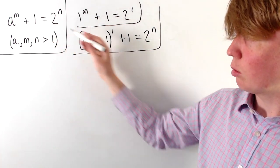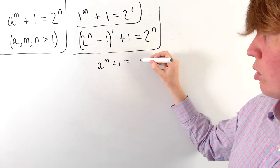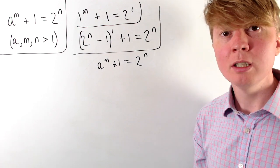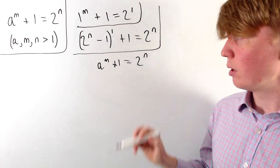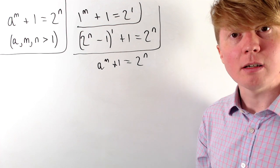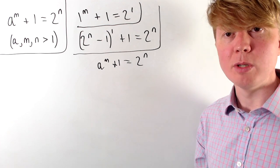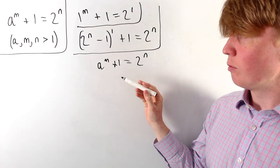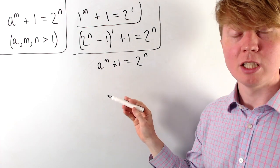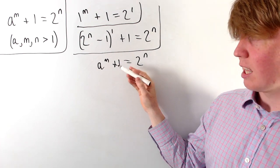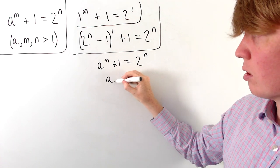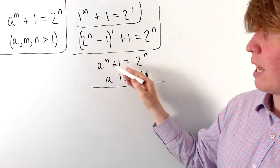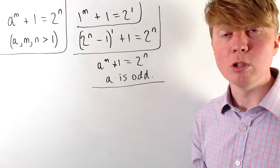Looking at the original equation, a to the m plus 1 equals 2 to the n. Since n is a positive integer power, 2 to the n is an even number. So a to the m plus 1 is even, which means a to the m has to be odd. An odd number raised to any integer power is odd, and an even number raised to an integer power is even. So a has to be odd in order for a to the m plus 1 to equal an even number.